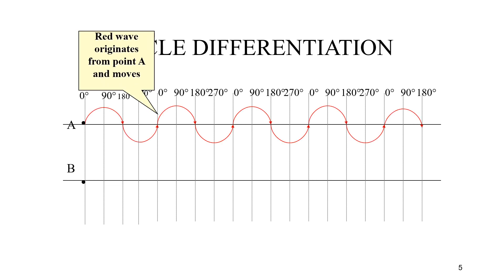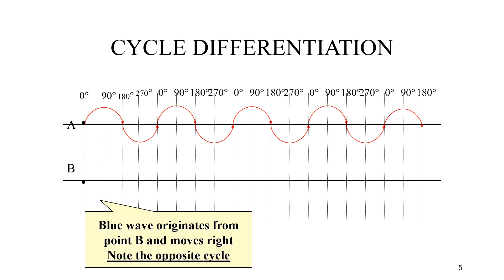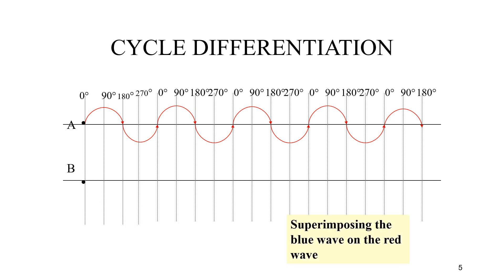As you can see here, the red wave originates from point A and moves right, and the blue wave originates from point B and moves right as well, but note the opposite cycle.